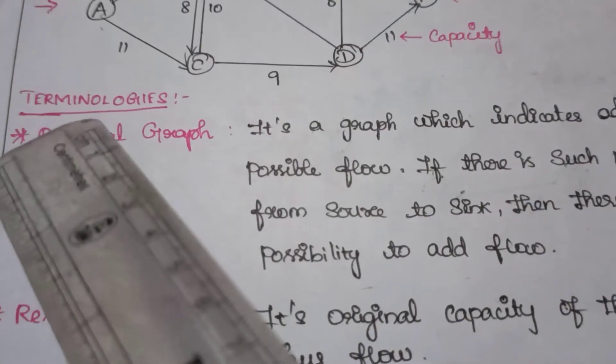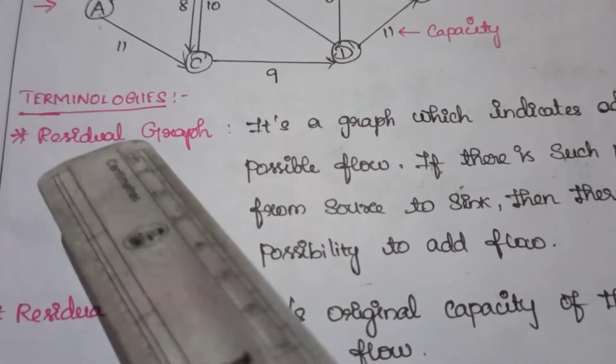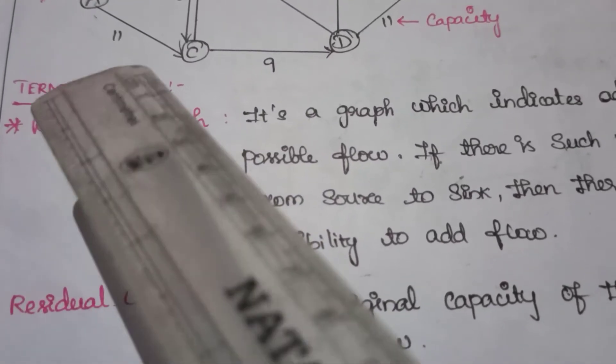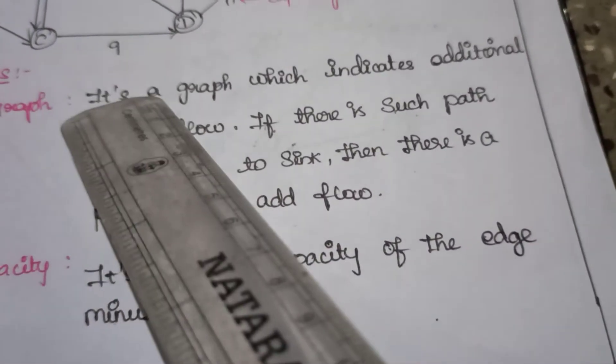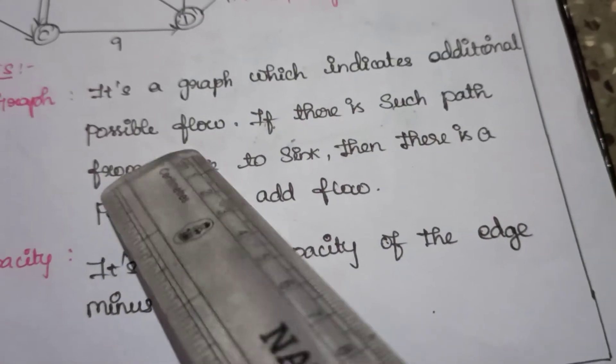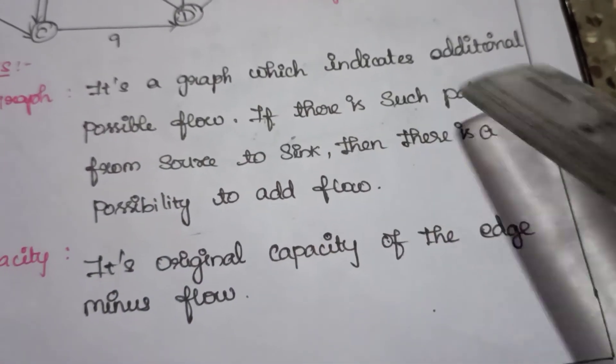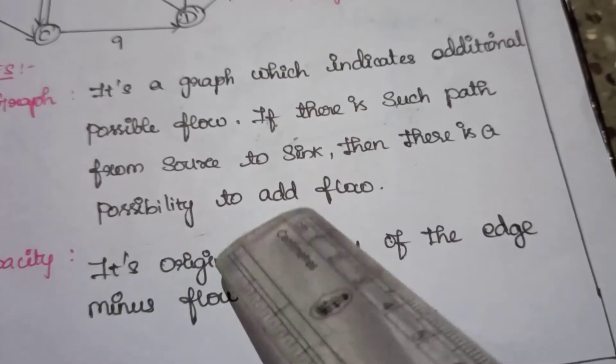Now let us move on to the terminologies we should know before entering into this problem. First, residual graph. It is a graph which indicates additional possible flow. If there is such a path from source to sink, then there is a possibility to add flow.